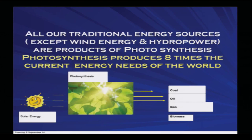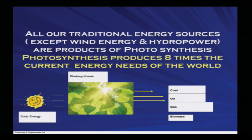If you look at all the traditional energy sources, you will realize that all our traditional energy sources — except wind and hydrothermal — are products of photosynthesis. Coal is basically trees and plants transformed over time deep in the earth; oil, gas, and biomass are the same way. Photosynthesis produces eight times the current energy needs of the world, so we have always depended on photosynthesis to sustain our day-to-day livelihood.